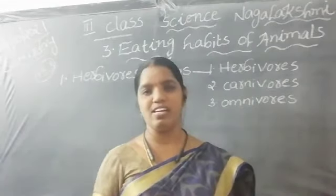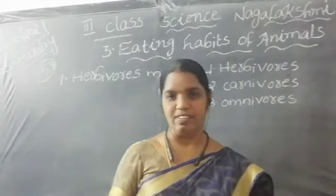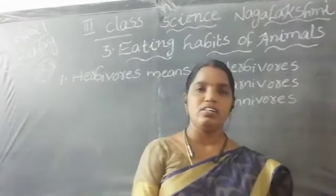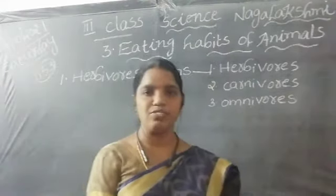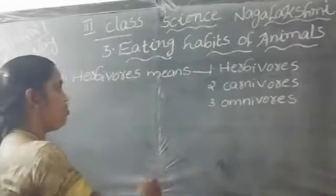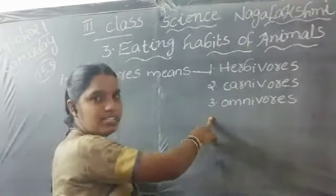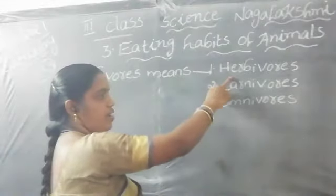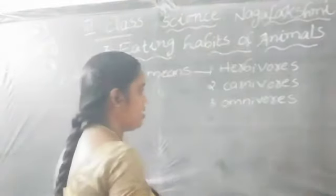Very good, children — clap for her! So among these animals, some are domestic and some are wild. Depending on their food habits, we divide them into three types: herbivorous, carnivorous, and omnivorous.